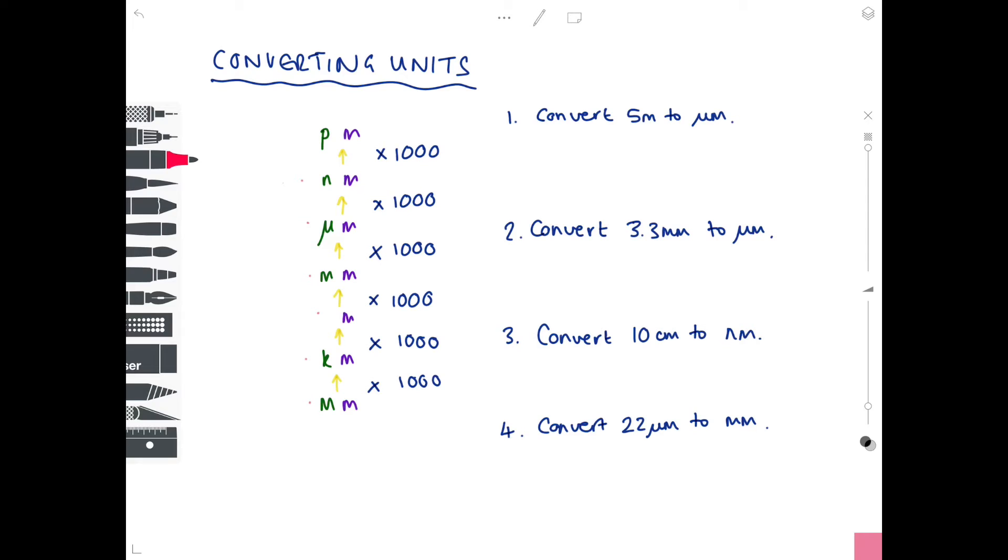So what I'm trying to show you here is you can use this simple expedient of timesing by a thousand to convert between the various steps. So to get from millimeters to micrometers, simply times by a thousand. To get from micrometers to nanometers, times by a thousand. It obviously works the other way around. If you need to get from nanometers here to micrometers here, divide by a thousand. But I didn't want to make this diagram too complicated, so as long as you know what you're doing, you can obviously reverse it. And I'm going to show you some examples right now.